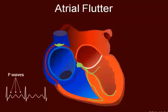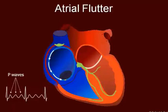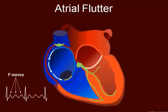Atrial flutter is often considered a re-entry tachycardia, although it is not re-entry in the strictest sense. Atrial flutter occurs because of a premature contraction. The most common form occurs in the right atrium and is counter-clockwise. A rarer form causes a clockwise rotation, and even more rarely, we will see the circuit occurring in the left atrium. Here we see the circuit coming around, with a slow pathway right here in orange, coming back up again, and then running down through the AV node to the ventricles.